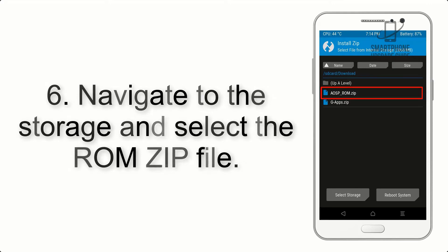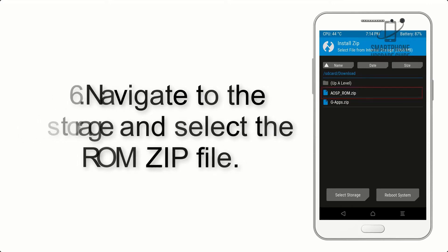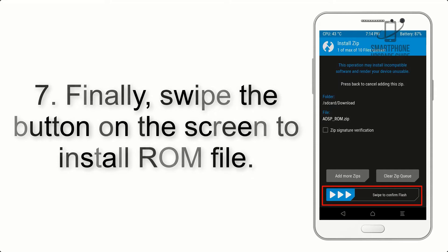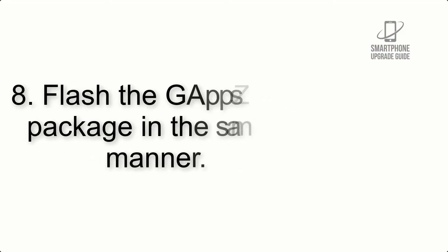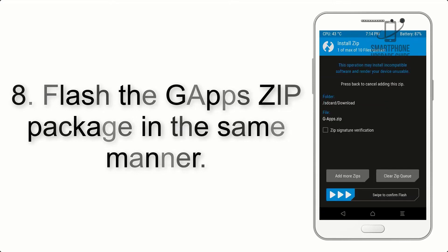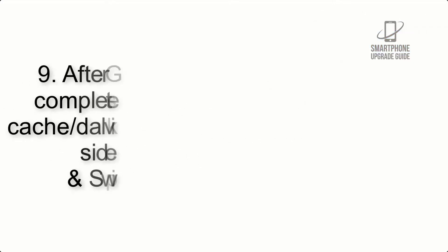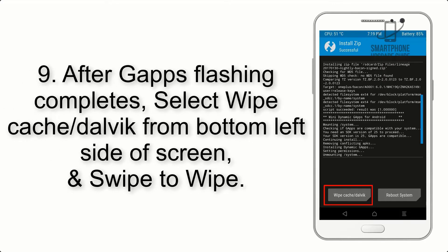Step 5: Go back to the recovery main screen and tap on the Install button. Step 6: Navigate to the storage and select the ROM zip file. Step 7: Swipe the button on the screen to install the ROM file. Step 8: Flash the GApps zip package in the same manner.